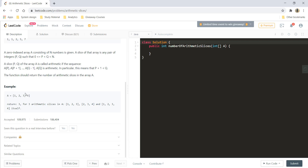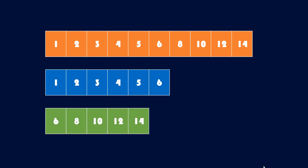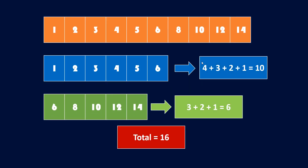Let's understand this with a graphical example. Taking a larger example, we can see two arithmetic sequences: one from 1 to 6 with a difference of 1, and another from 6 to 14 with a difference of 2. The number of possible arithmetic slices is 10 for the first sequence and 6 for the second, giving a total of 16 arithmetic slices.